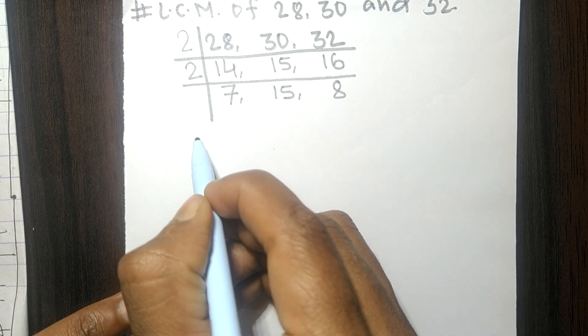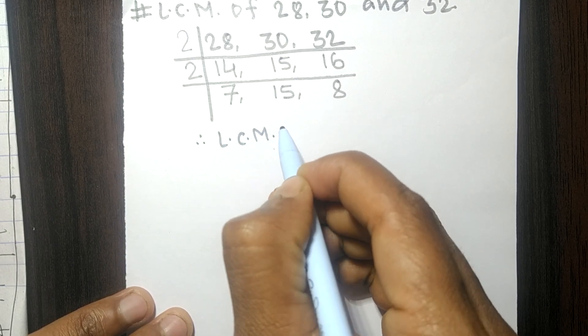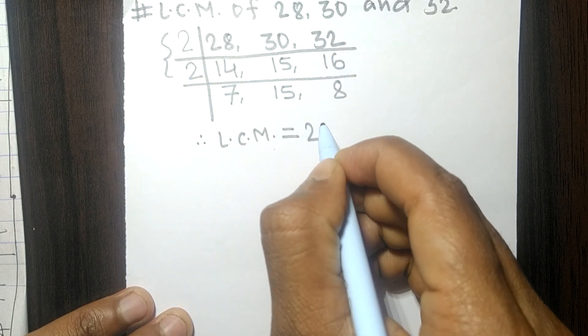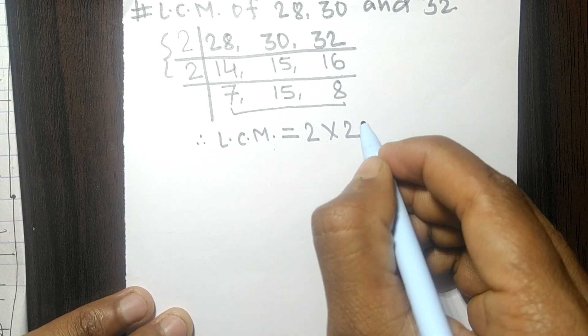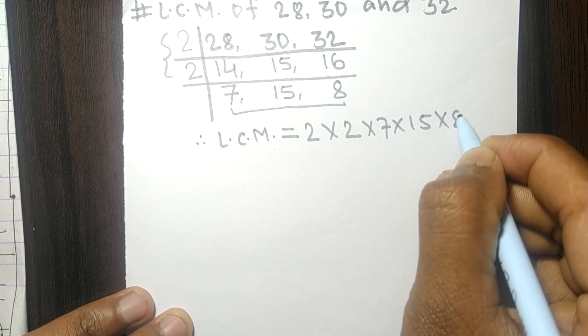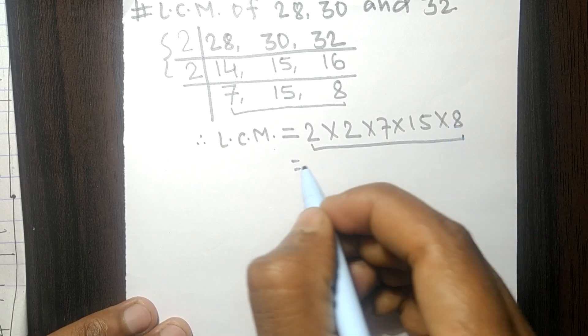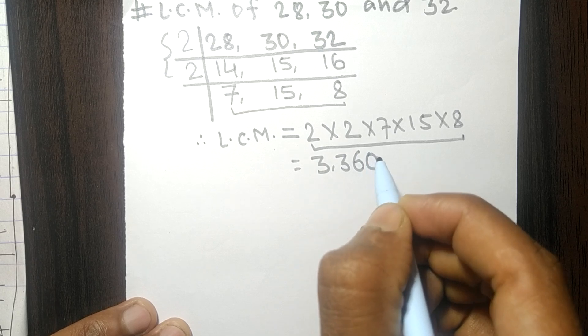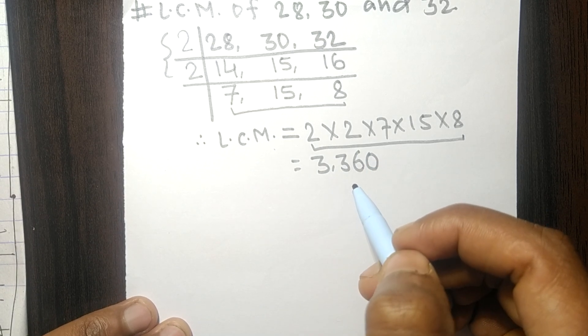Therefore its LCM is equal to, from this side it is 2 times 2, and from this side it is 7 times 15 times 8. So by multiplying all these numbers we get 3360.